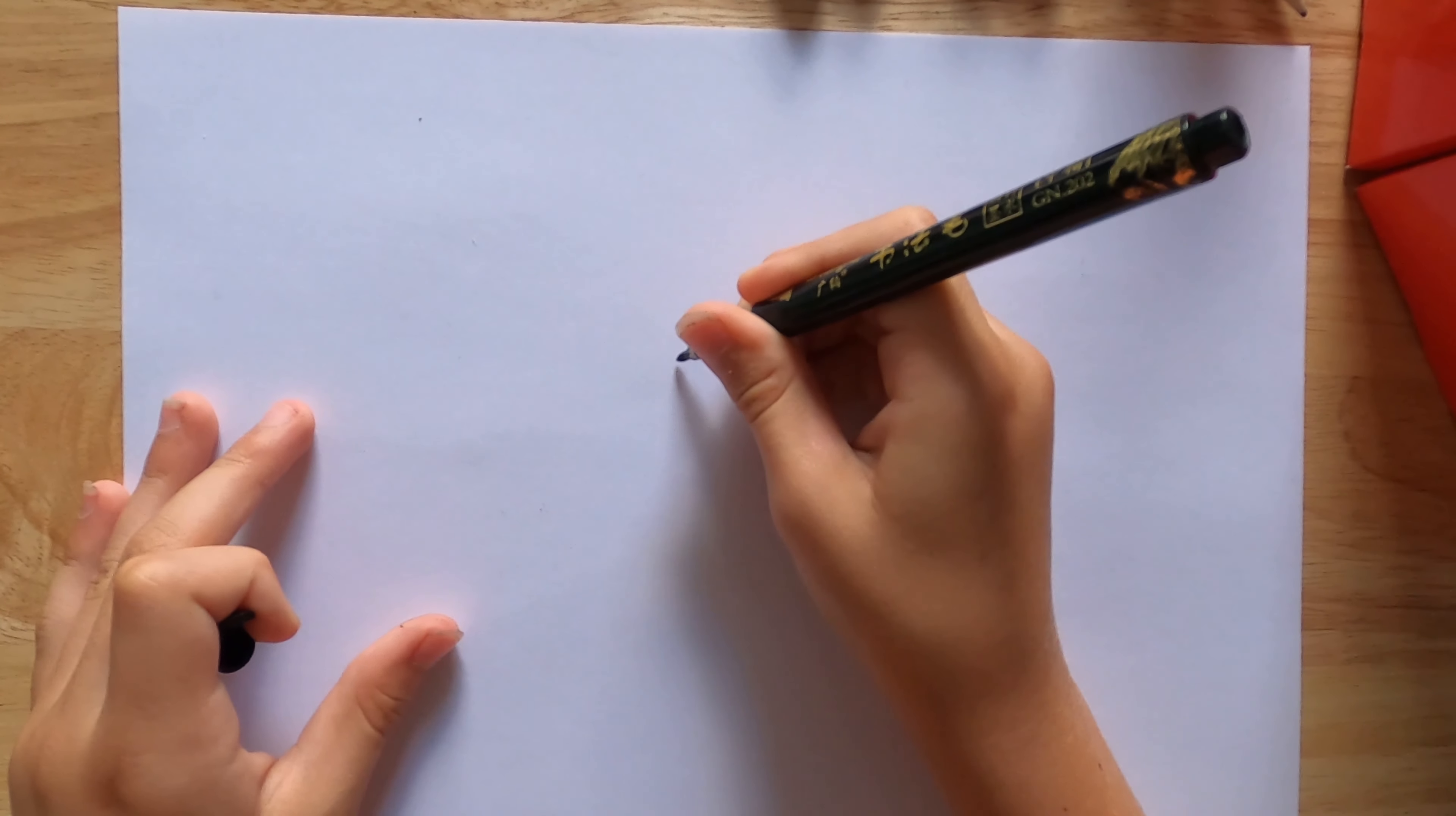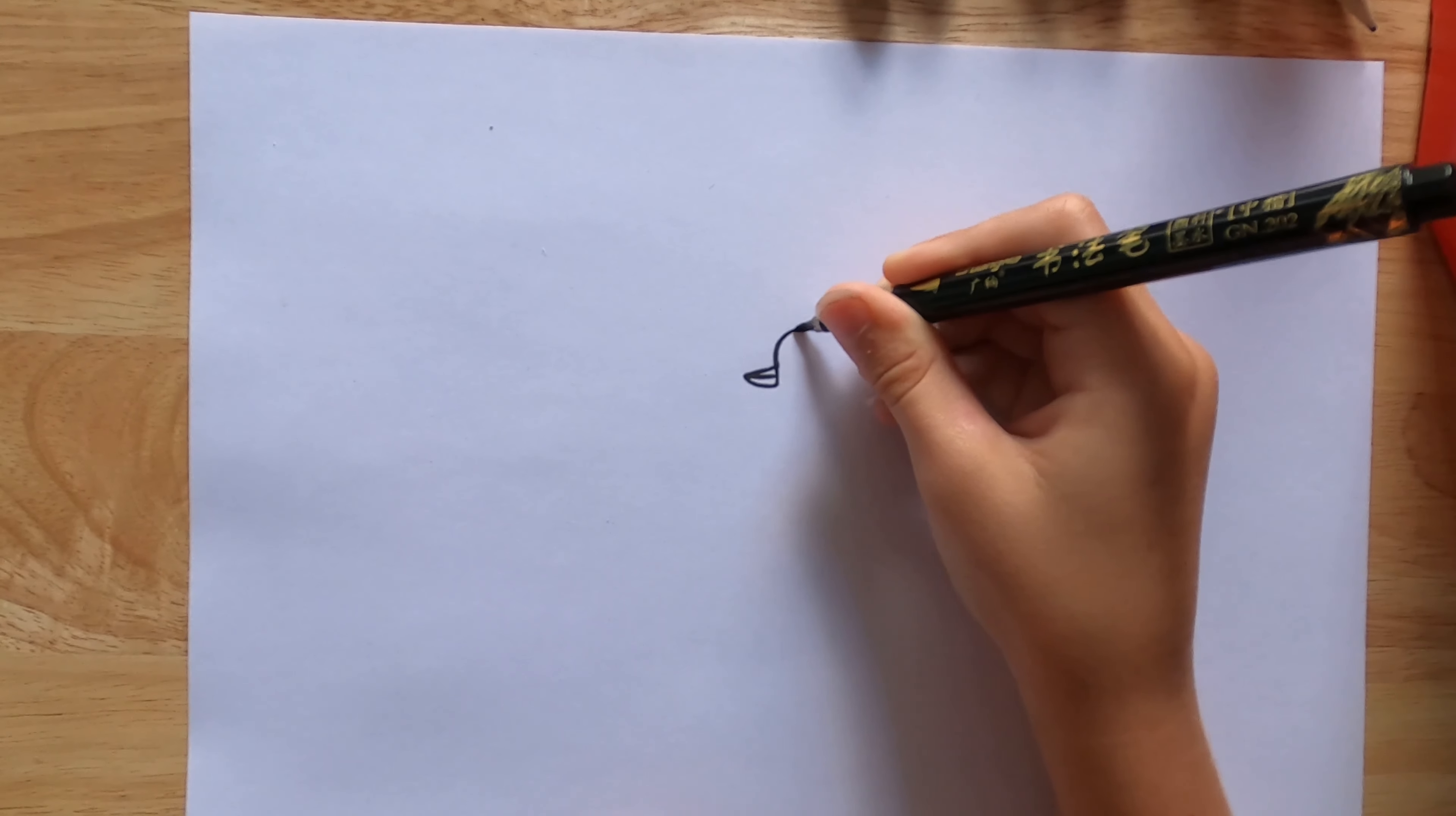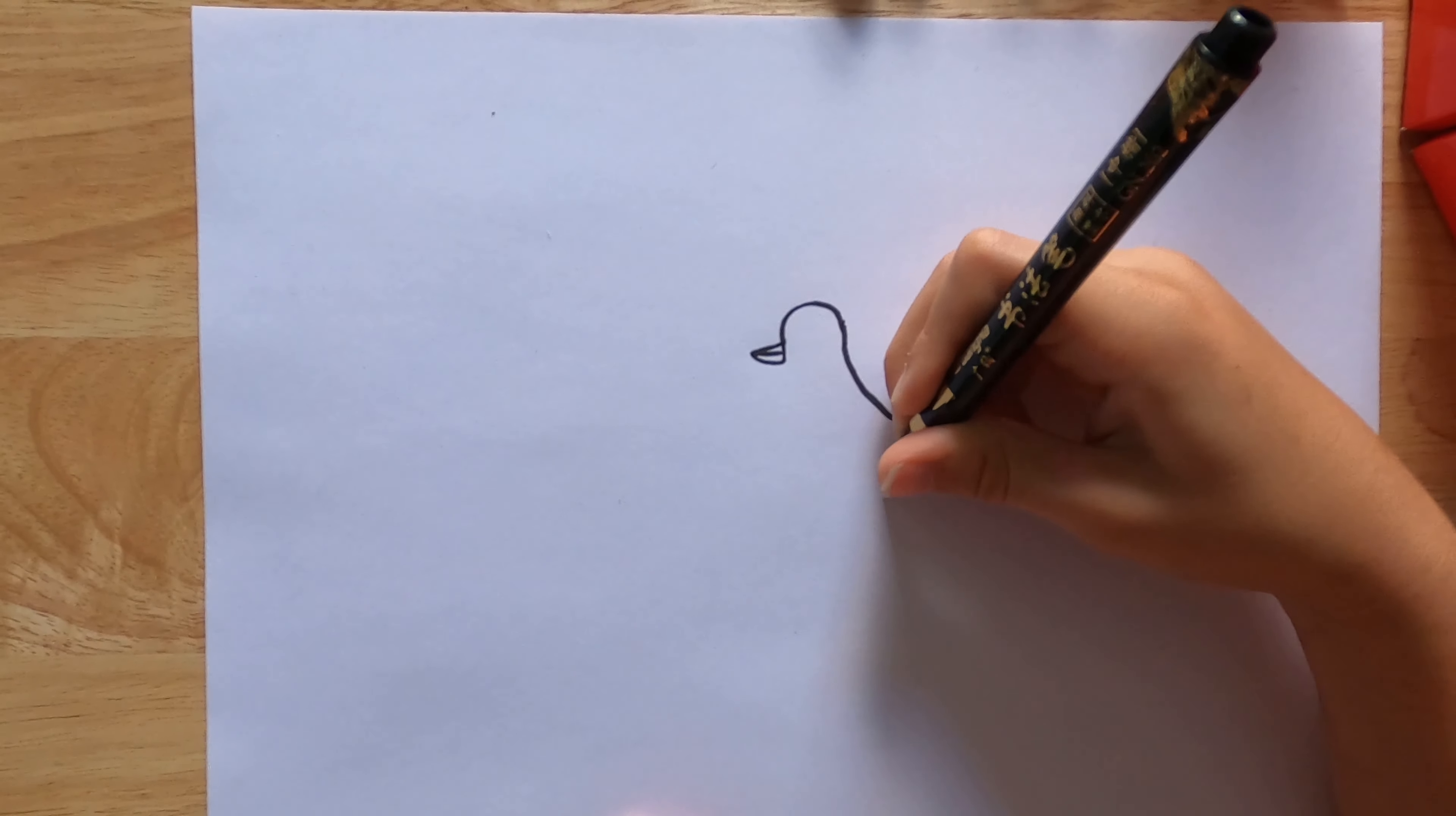We're going to start with a nice smooth triangle. Then we're going to make another symmetrical to it. Then we're going to go round and finish off in line with the beak. Then we're going to come down and curve around. Then just do some small tassels and come back around.